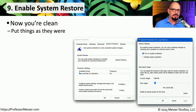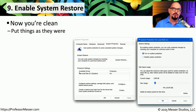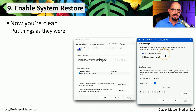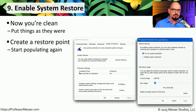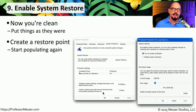Earlier we deleted all restore points because they were most likely infected with malware. Now that we've completely deleted everything on the system and restored from a known good image, we can re-enable system restore. Check the system properties under the System Protection tab and make sure the restore settings are set to turn on system protection. Since we've just turned system restore back on, you should click the button to create a restore point right now for the drives with system protection enabled, ensuring you have a good configuration to move back to if needed.